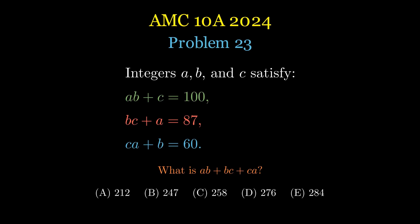And the big question is, what is AB plus BC plus CA? Our answer choices are 212, 247, 258, 276, and 284. Let's break this down and find the solution step by step.